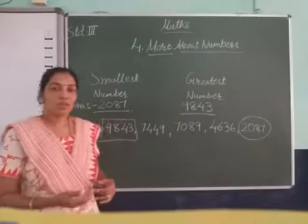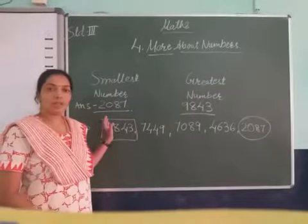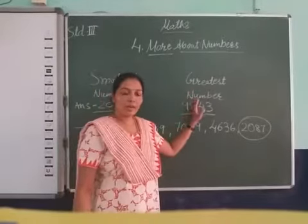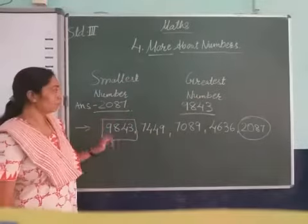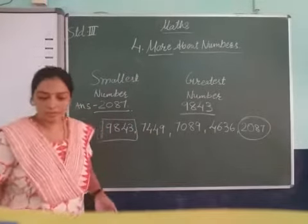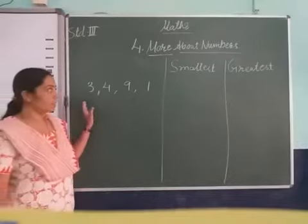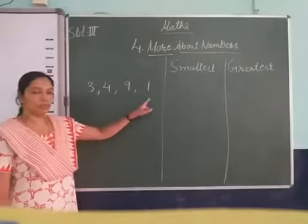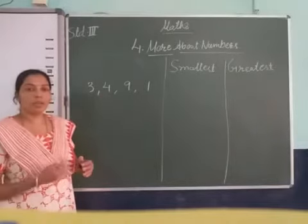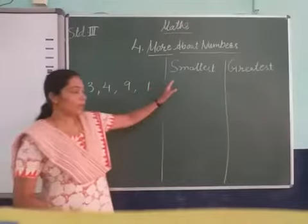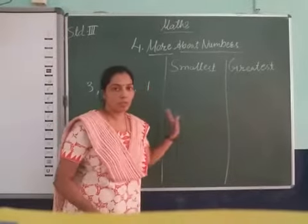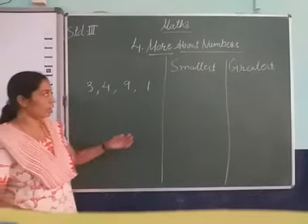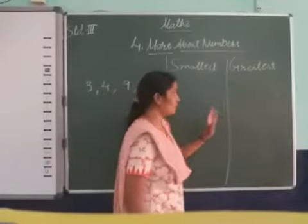So do you understand how we compare the numbers? If you know how to compare numbers, then you will easily find out which one is the smallest and which one is the greatest. Now let me see one more example. Students, here in this example a few digits are given: 3, 4, 9, 1. Now you have to make both the smallest and greatest number using these digits.